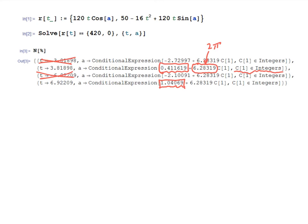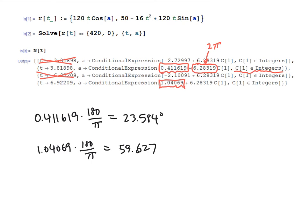This problem asks us to convert to degrees, so we've got one last step, and that's to multiply our two results, 0.411619 times 180 over pi. That's how we convert from radians to degrees, and 1.04069 times 180 over pi. And that's going to give us our two results, which are, this one works out to be 23.584 degrees, and this one's going to be 59.627 degrees. So those would be our two answers.